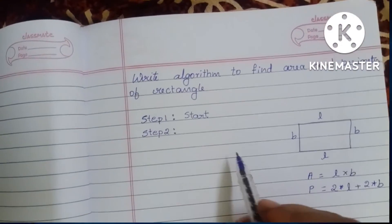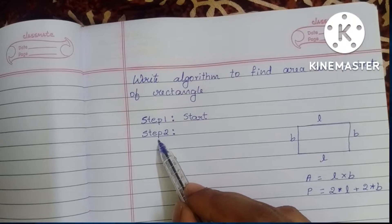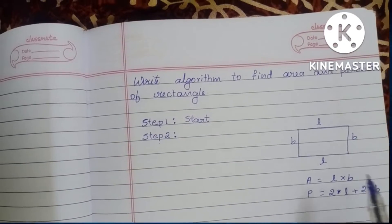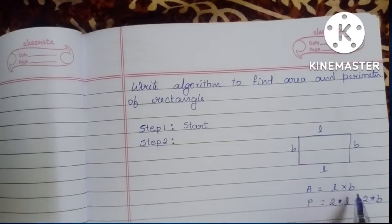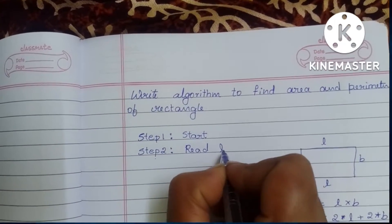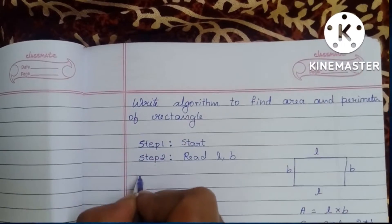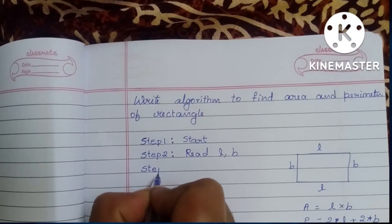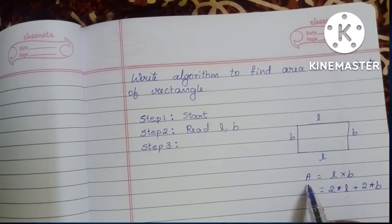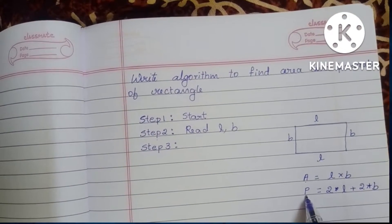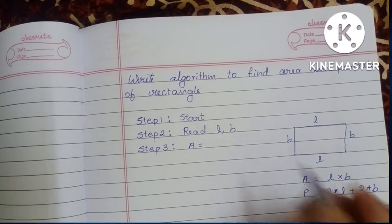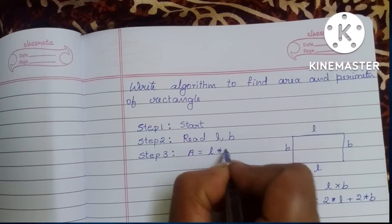In Step 2 we have to read the input. The inputs are length and breadth, so write: Read L, B. In Step 3 we start the process — we have to calculate the area. Write: A is equal to L times B.